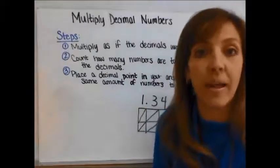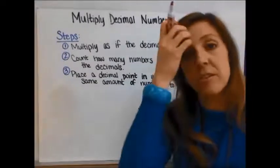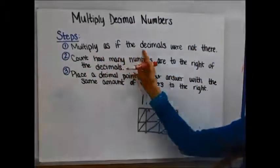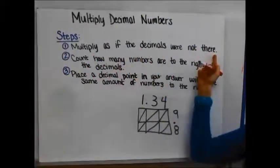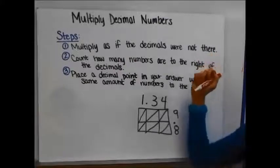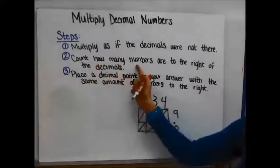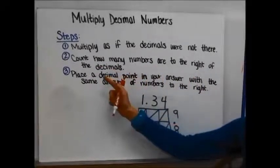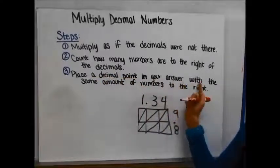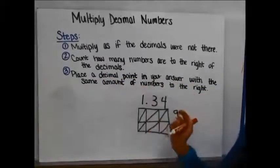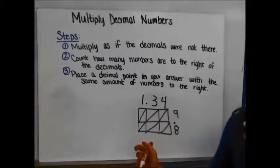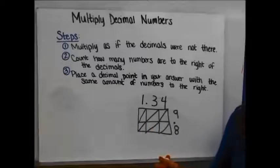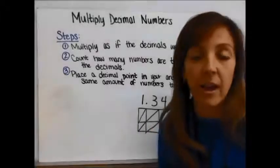Now let's look at how to multiply decimal numbers. The steps are: multiply as if the decimals are not there, then count how many numbers are to the right of the decimal in both numbers, and place the decimal point in your answer with that same total number of digits to the right.